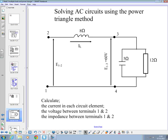Solving AC circuits using the power triangle method. We've got a circuit here with two terminals, one and two, with an unknown voltage between those two. That's one of the things we're going to calculate, the voltage at terminals one and two.